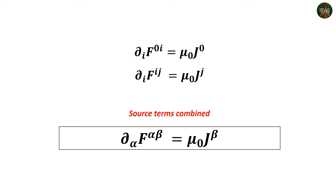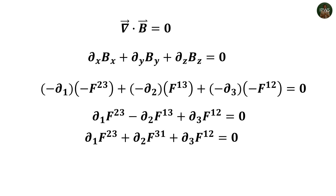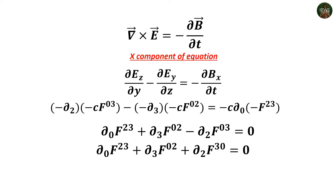For the two source-free Maxwell's equations, we replace every term with covariant and field tensor counterparts, but the pattern is less obvious. Divergence of B gives del_1 F^(23) + del_2 F^(31) + del_3 F^(12), with indices cycling in order. For the third Maxwell's equation (Faraday's law), working component-wise and replacing with covariant differentials and contravariant field tensors, the x-component gives: del_0 F^(23) + del_3 F^(02) + del_2 F^(03) = 0.